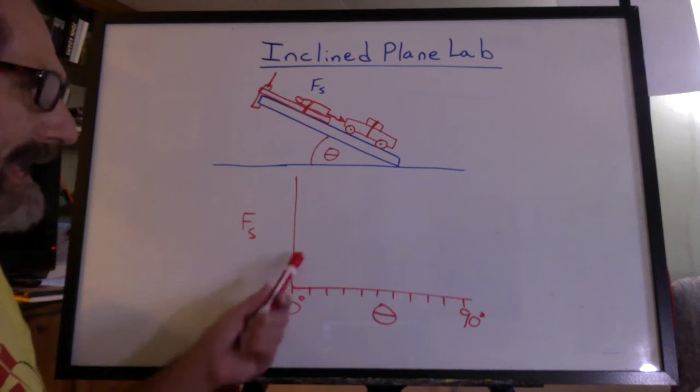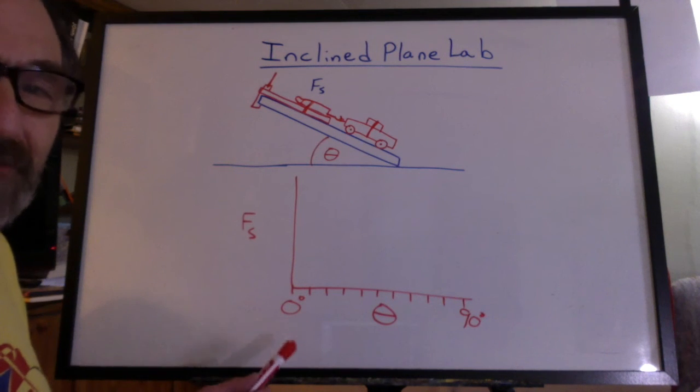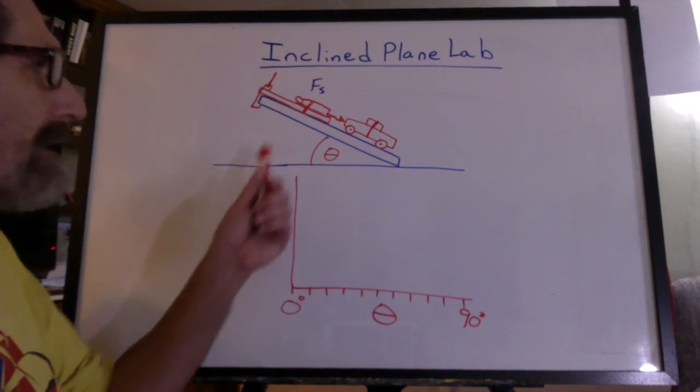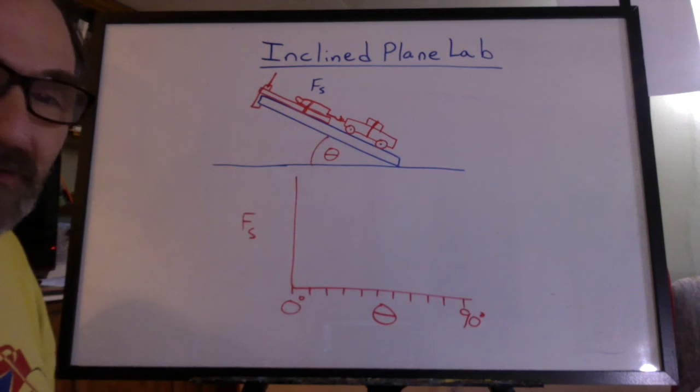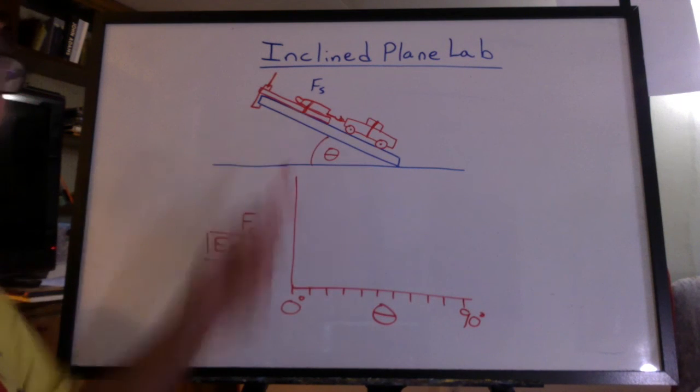You're going to want to take angle measurements about every 10 degrees. It doesn't really matter if it's exactly 10 degrees. It could be a few above, a few below. And then you just keep on cranking this up, reading that off and making the graph. And these values will be experimental because you're reading them right off the spring scale.